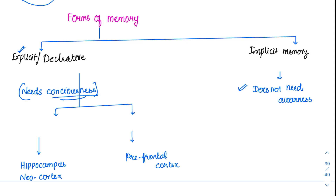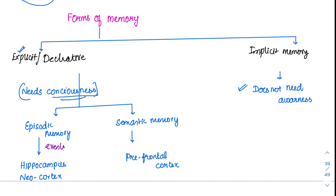Explicit memory is further divided into episodic memory and semantic memory. What is episodic memory? Suppose you attend your friend's birthday or wedding, and I ask you what events happened that day — you will be able to answer, recalling everything from getting dressed to the food. This kind of memory which is involved in remembering episodes or events is called episodic memory.